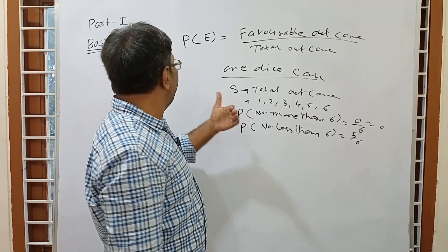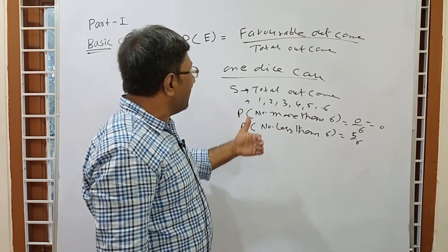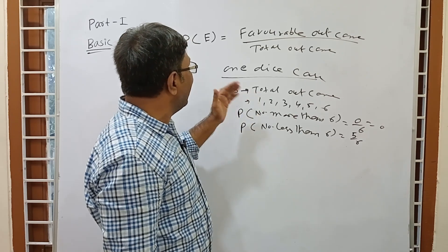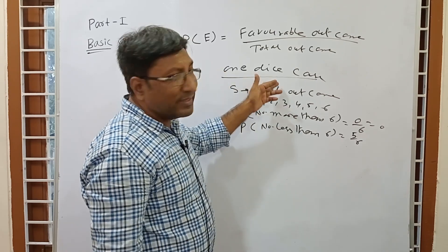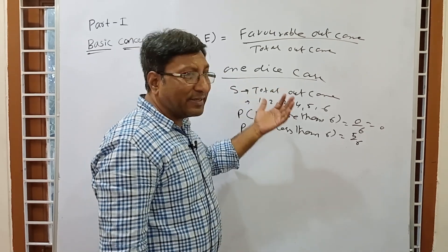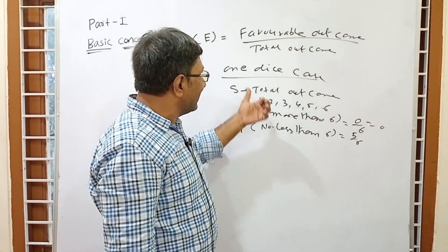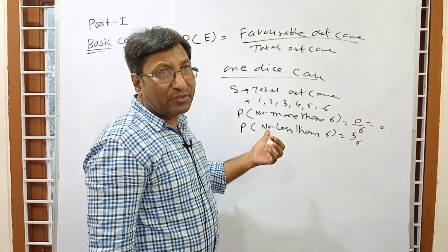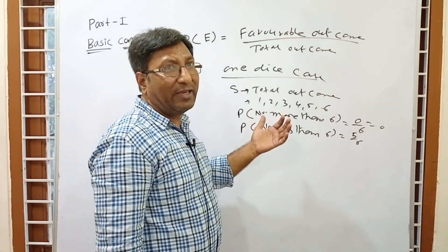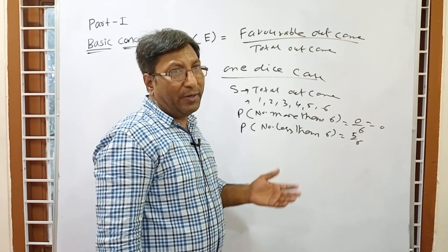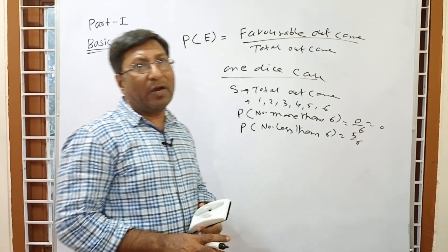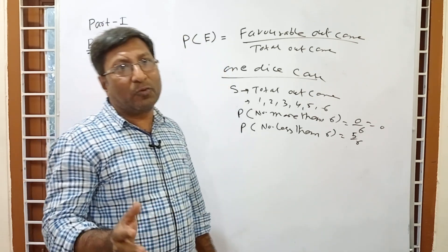For today we stop here. In the next video — Part 2 — we will continue with the 1-die scale, then the 2-die scale, then card questions, and tricky questions on permutation and combination. Watch it, and if you have any doubt, go to the comments and watch the video from start to end. Thank you.